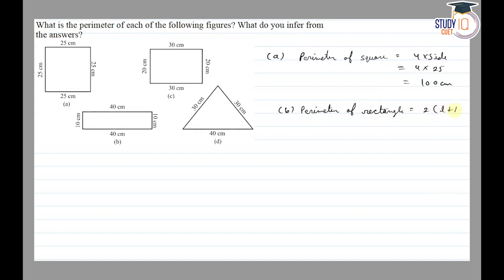The perimeter of rectangle is equal to 2 into length plus breadth. Length given is 30 and breadth given is 20. This is equal to 2 into 50, which equals 100 cm.